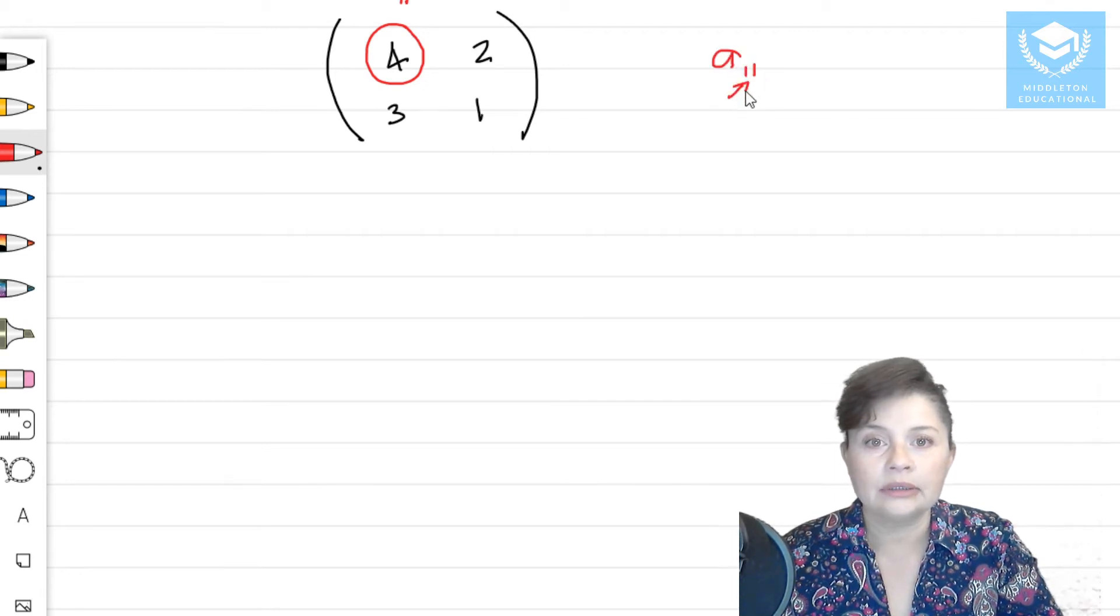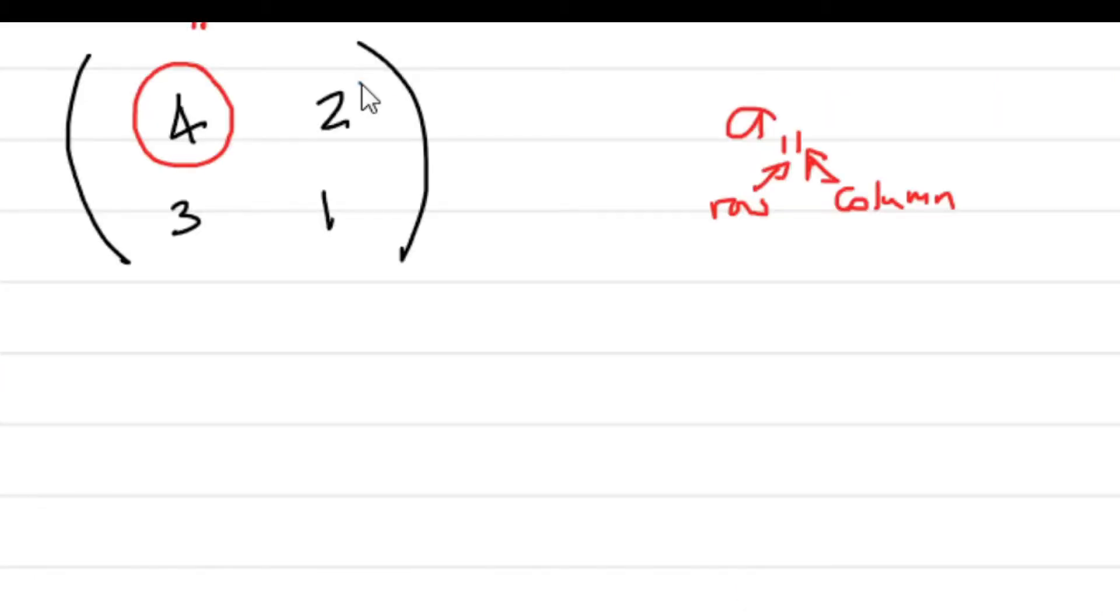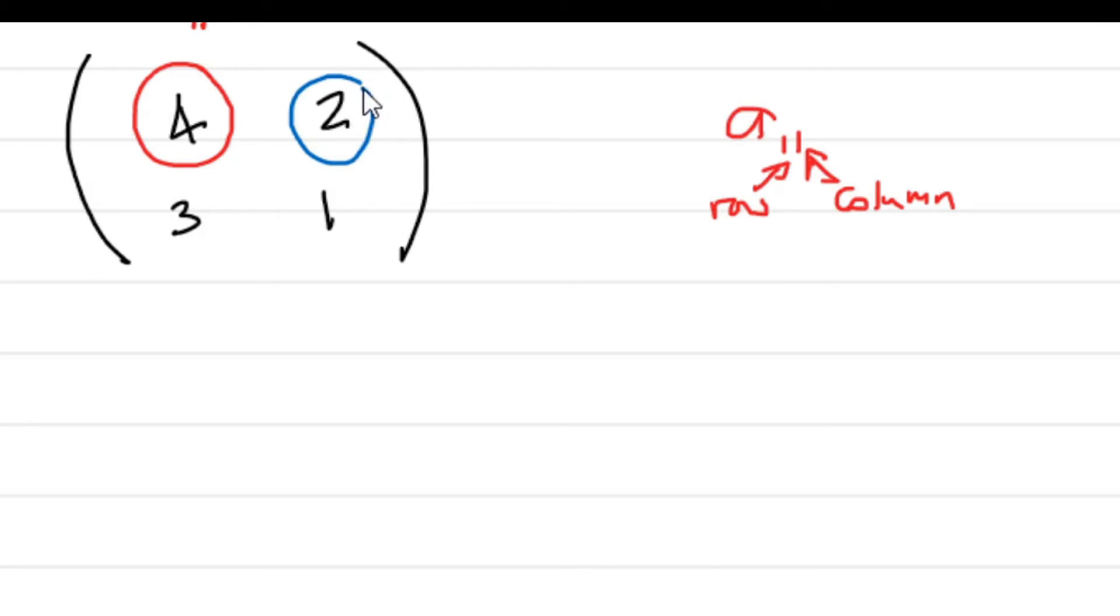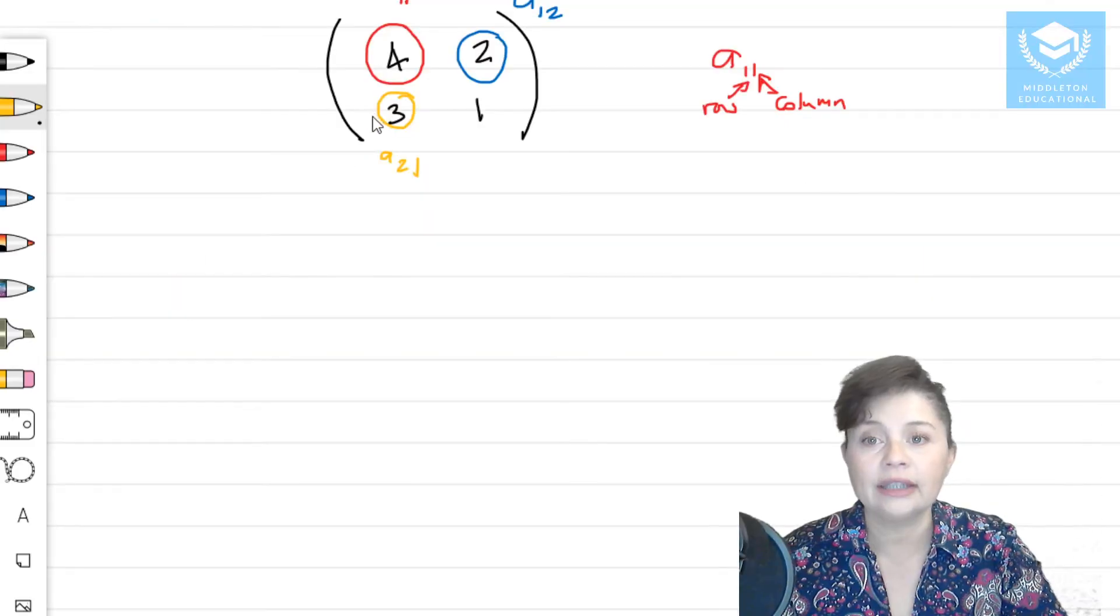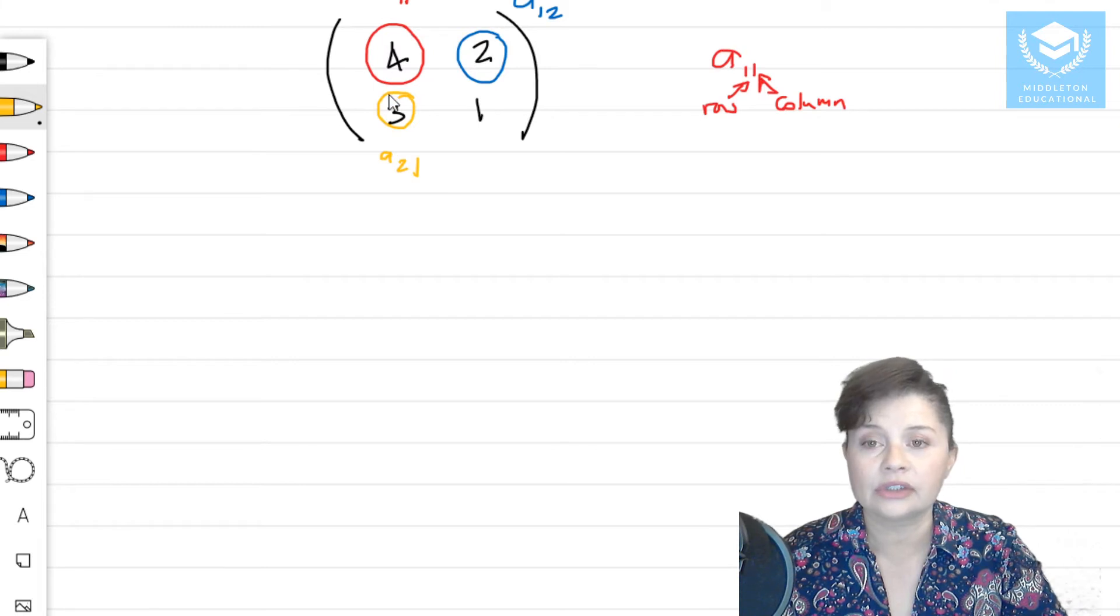the first number is the row that it's in, and the second number is the column that it's in, right? 2 would be a 1, 2. 3 would be a 2, 1, because you're looking at the second row and the first column.